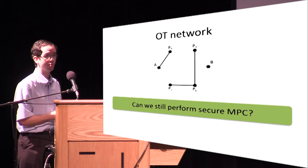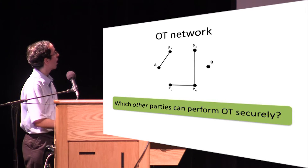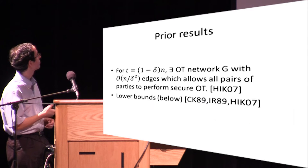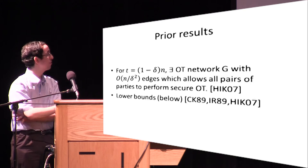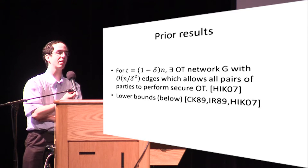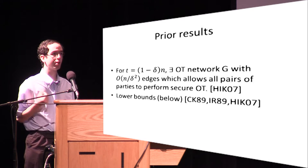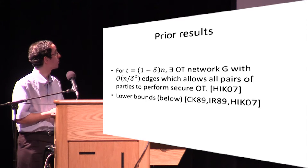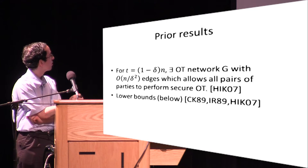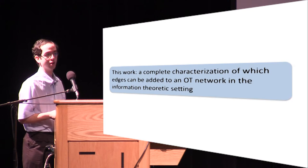The question we ask is: given a network where some pairs of parties can perform oblivious transfer, can we still perform secure MPC? In particular, which other pairs of parties can perform oblivious transfer? The starting point of our investigation is a paper of Harnik, Ishai, and Kushi-Levitz, who showed that if 99% of the parties are allowed to be corrupt, there exists a particular sparse network that allows every pair of parties to perform oblivious transfer securely. Our result generalizes theirs: rather than just talking about a particular graph, we give a complete characterization of when it is possible to get oblivious transfer between a pair of vertices.